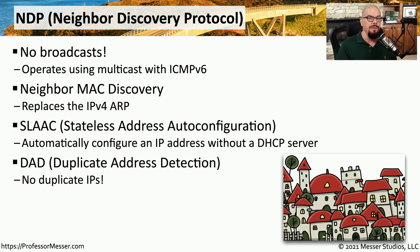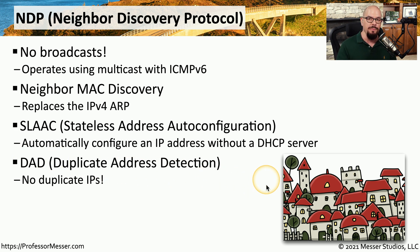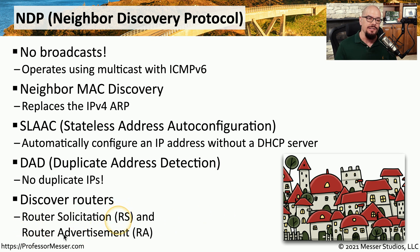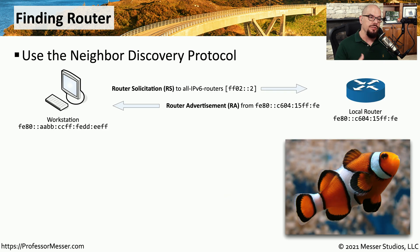To support IPv6 auto-configuration, we need to use Duplicate Address Detection, or DAD, to ensure that no duplicate IP addresses are configured. This is also the protocol used to find routers on our network. The Neighbor Discovery Protocol sends a Router Solicitation packet and listens for a Router Advertisement, allowing local devices to automatically configure themselves and identify where the routers are on their local subnet.